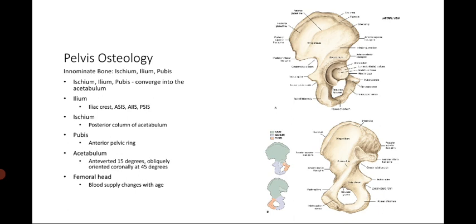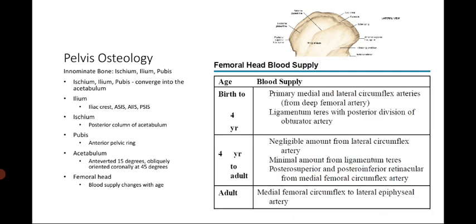An important thing to note about the femoral head, which is part of the hip anatomy, is that the blood supply differentiates with age. From birth to four years, the primary blood supply comes from the ligamentum teres as well as the medial and lateral circumflex arteries. Upon reaching adulthood, the only blood supply to the femoral head is the medial femoral circumflex artery. This is important because it determines the management for some patients.